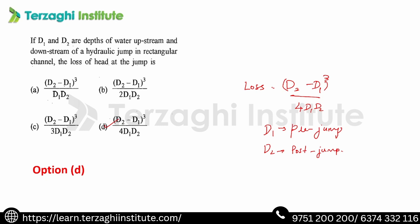The efficiency of a hydraulic jump is defined as actual energy loss divided by the initial energy, multiplied by 100.